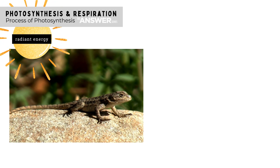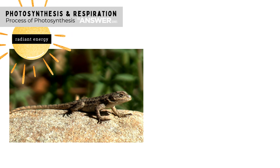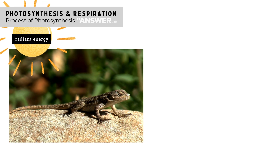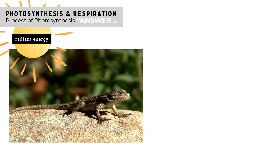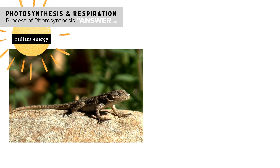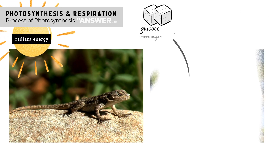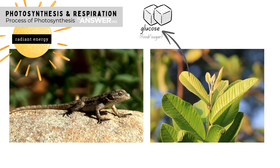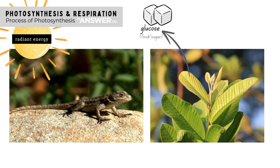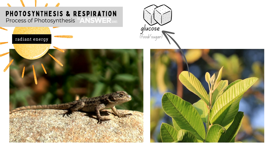Most organisms cannot use the sun's energy directly. For example, a lizard lying in the sun can warm its body from the sun's heat, but it cannot use this energy to move its muscles or reproduce. Plants, however, are able to trap radiant energy directly from the sun and use it to make energy-rich food molecules like glucose.